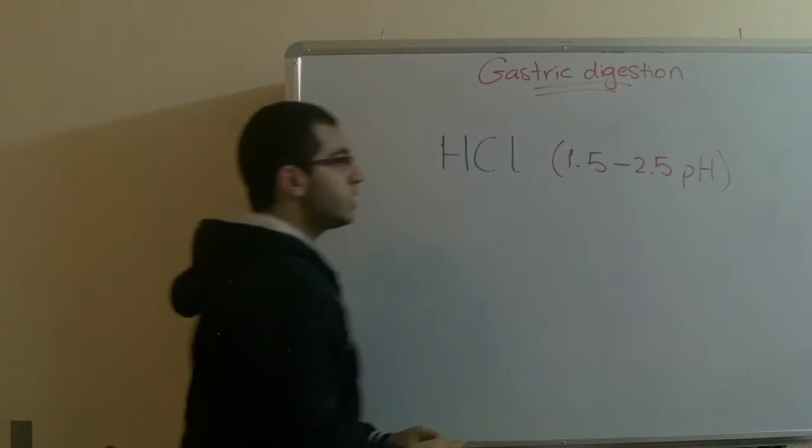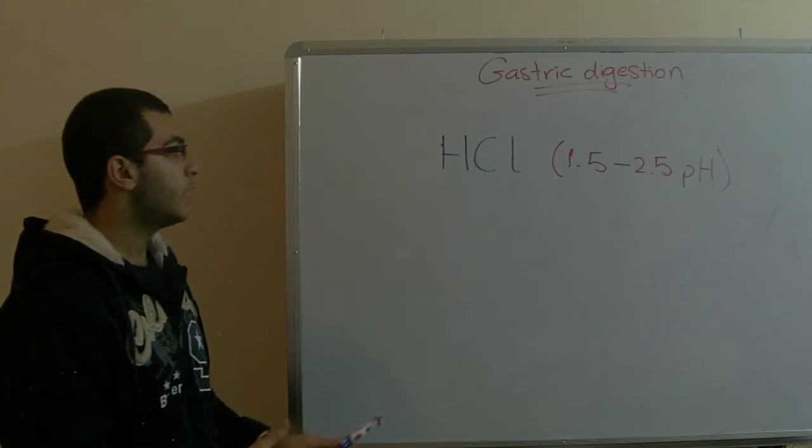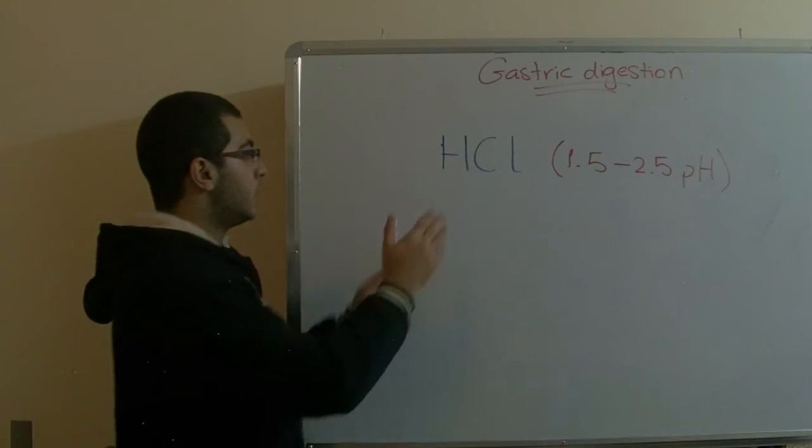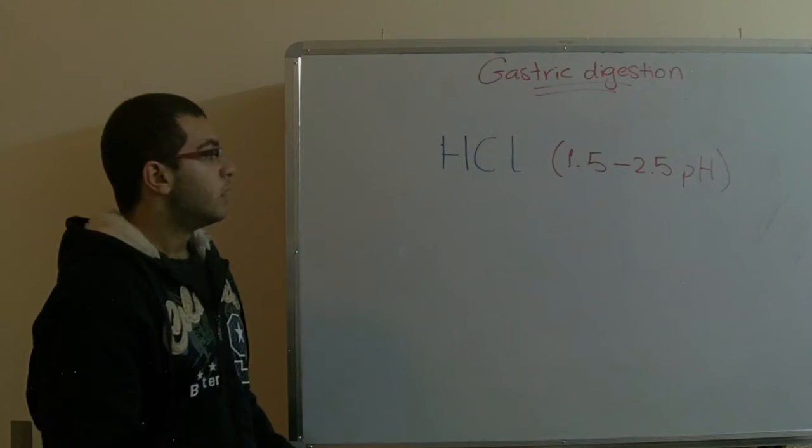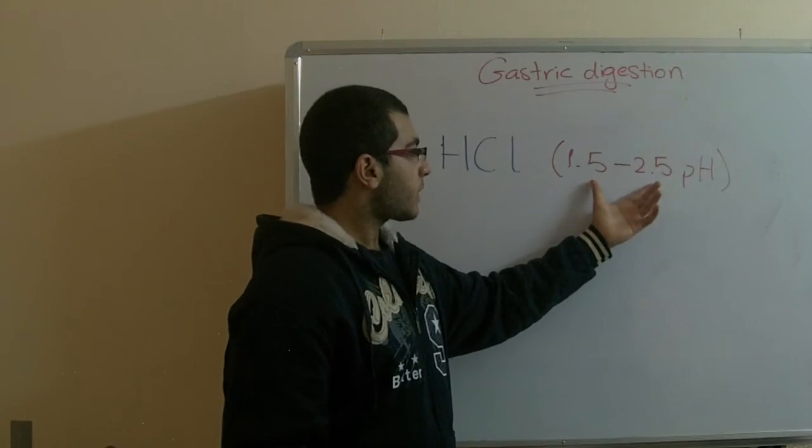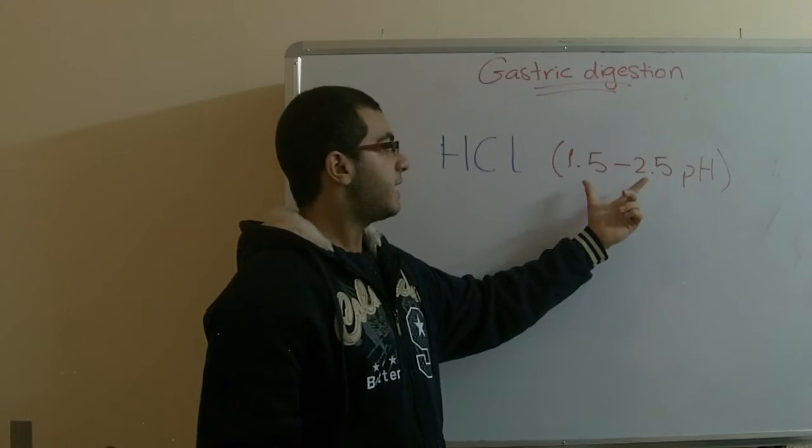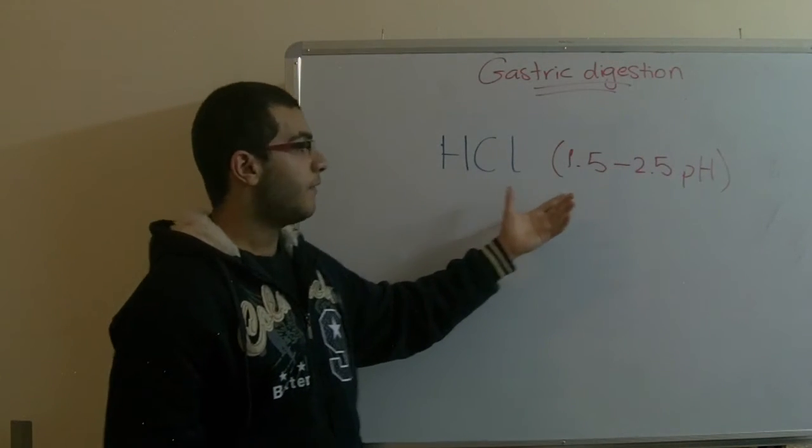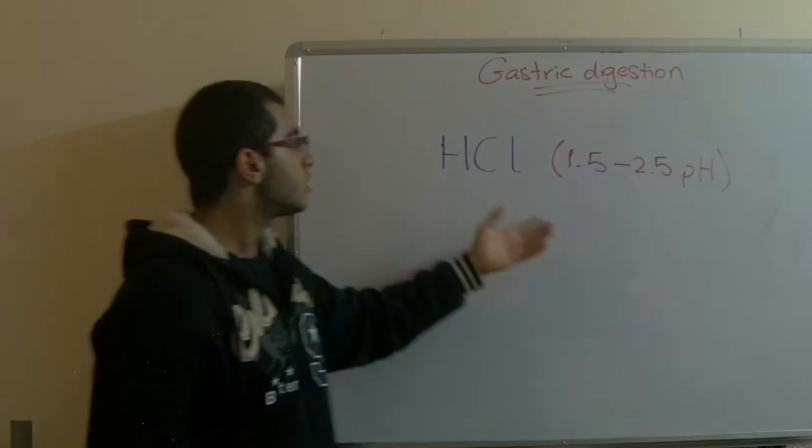And the pH is the property which determines whether the substance is alkaline or acidic. Of course this is hydrochloric acid. So if the value is less than 7 pH, the medium is acidic. If it's greater than 7, it's alkaline.